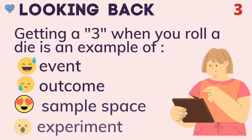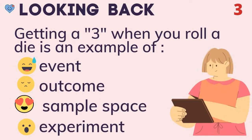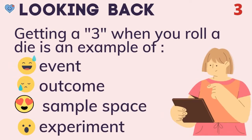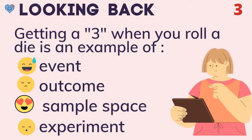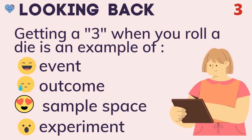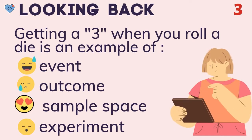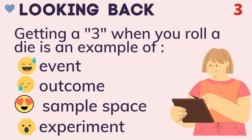Third question: getting a three when you roll a die is an example of — event, outcome, sample space, or experiment? The correct answer is event.